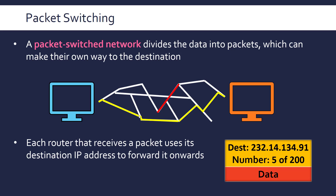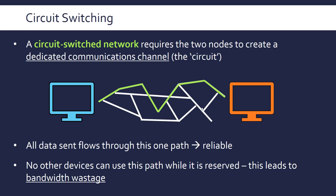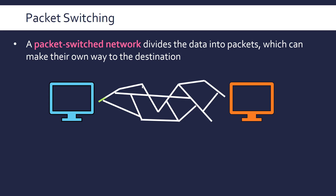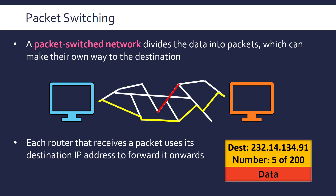The devices in between — routers in this case — use information in the header of each packet to forward it onwards towards the destination. In a circuit-switched network, the intermediate devices have a static route and just forward data to the next device without any real decision making. Whereas in a packet-switching network, because it's more dynamic, routers can make their own decisions based on the IP address. In circuit switching, data is received in the same order it was sent, because it's sent as a steady stream across the one route.